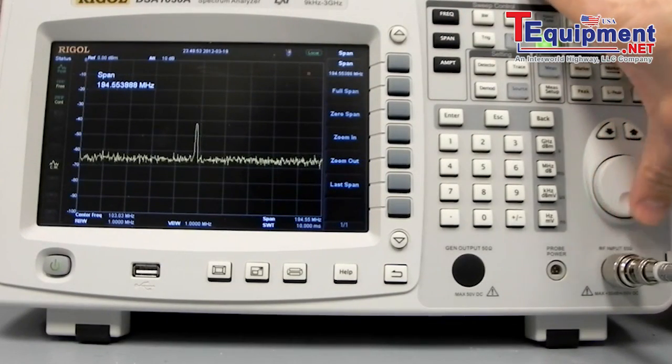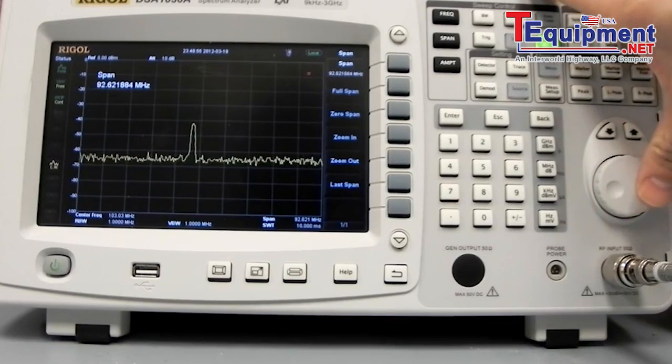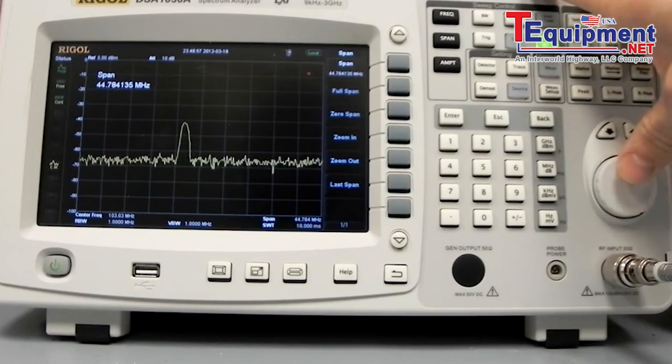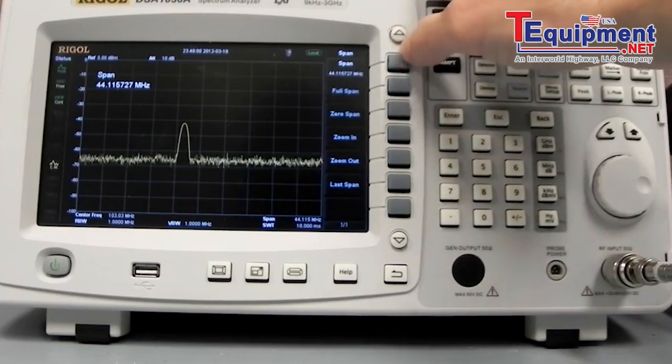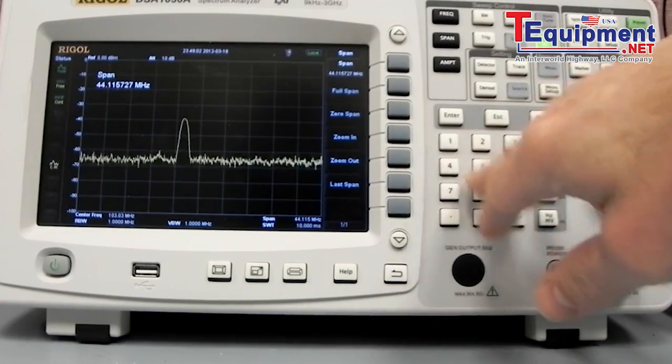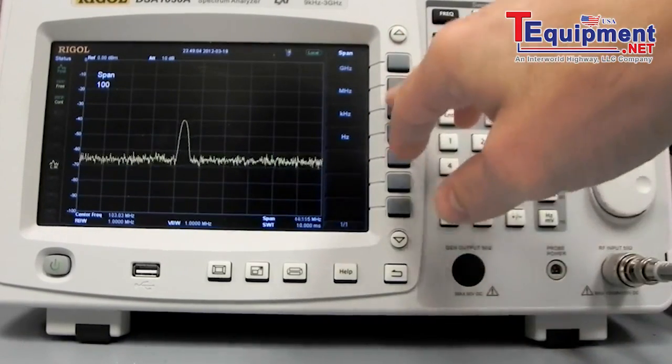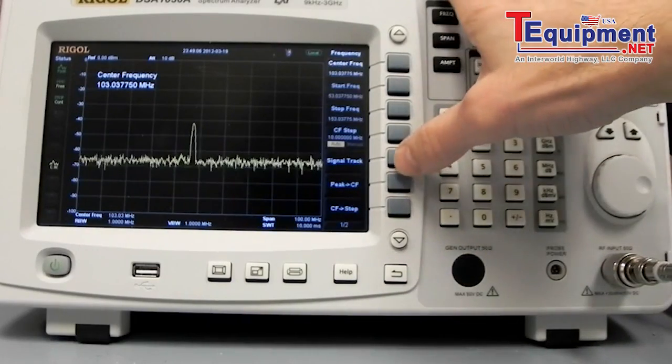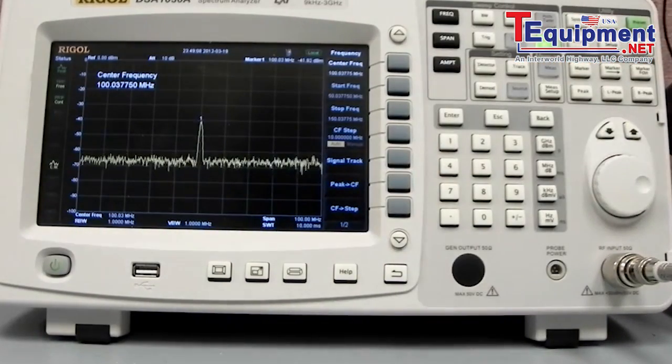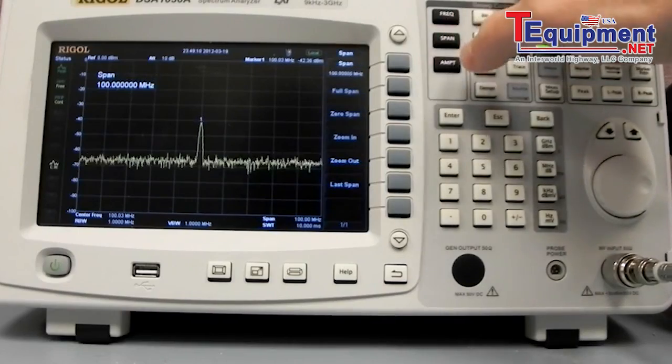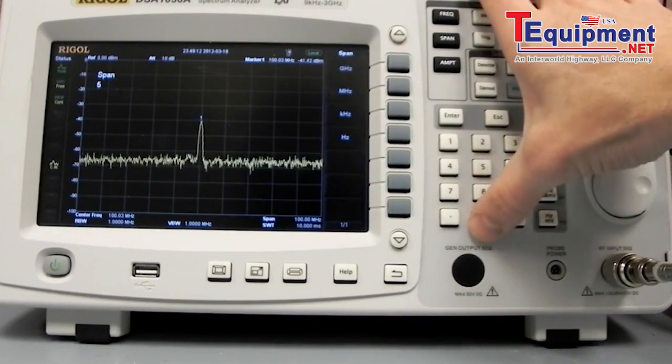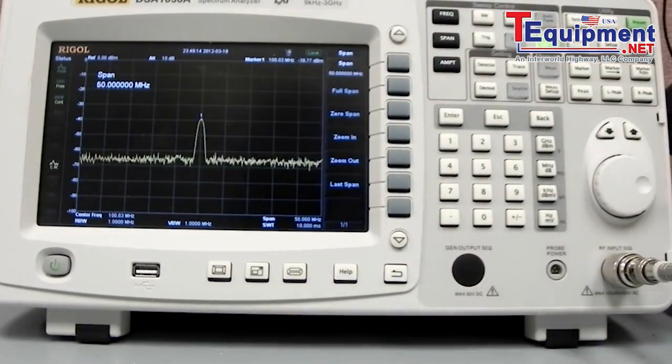Let's zoom in a bit. One way is to adjust the span that way. Another way, you can hit the span and do something like 100 MHz. And we could take to the peak center frequency. And again, let's make the span 50 MHz. We'll just widen it out just a touch.